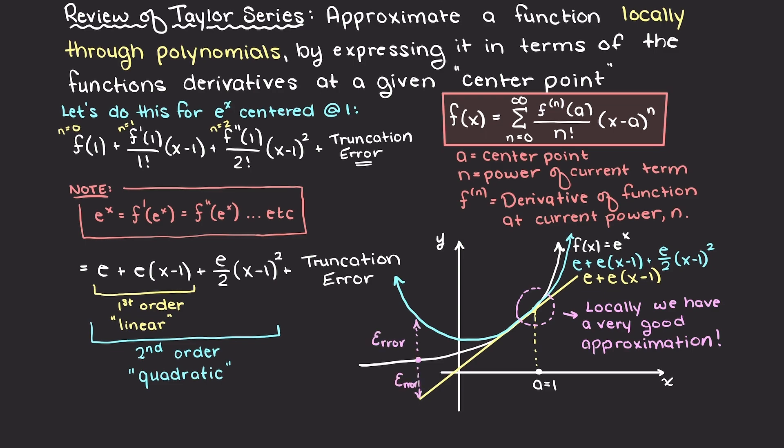This is because we are truncating or cutting off additional fitting terms in our Taylor series expansion. With each additional term, our approximation gets better and better as we have less error.